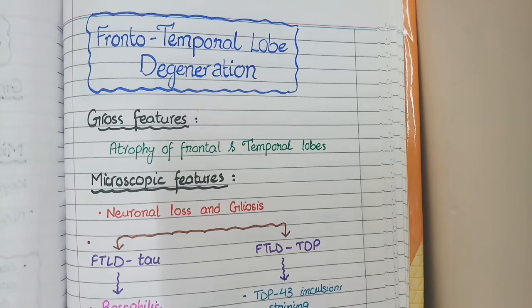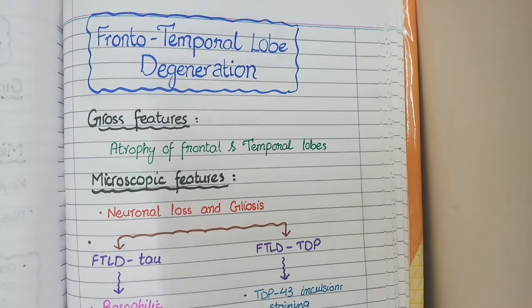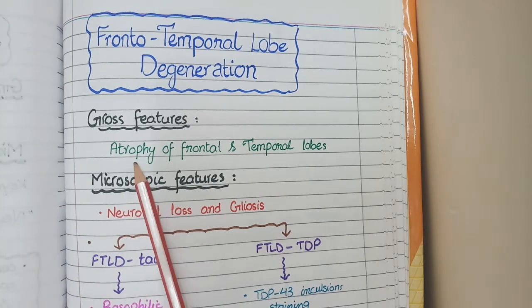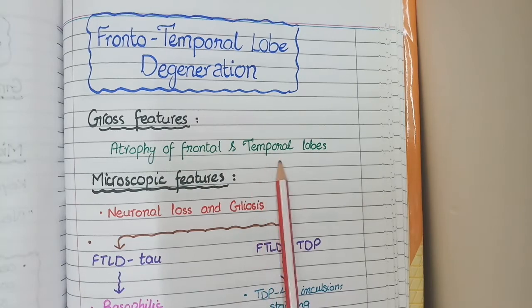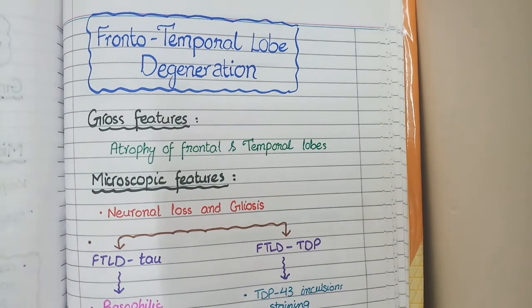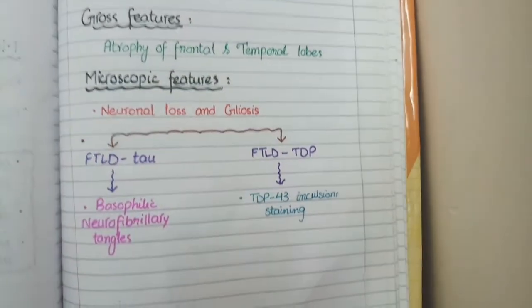In this video, we will study the pathological features in frontotemporal lobe degeneration. In frontotemporal lobe degeneration, as the name implies, there is atrophy of frontal lobes as well as temporal lobes. So on gross specimen, you will see atrophy of frontal and temporal lobes.